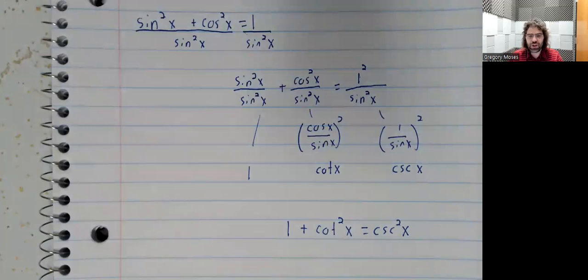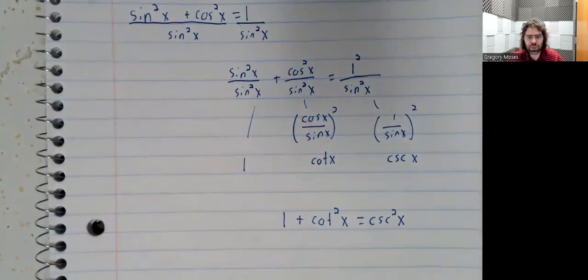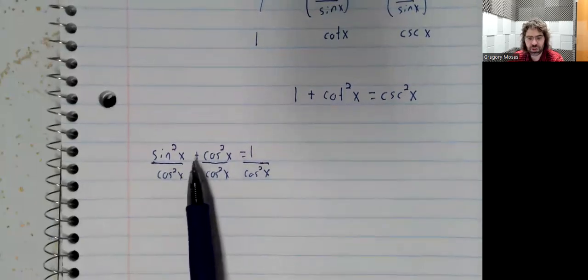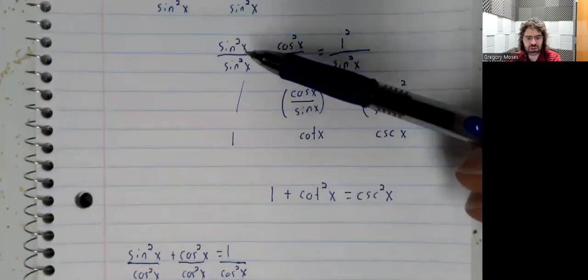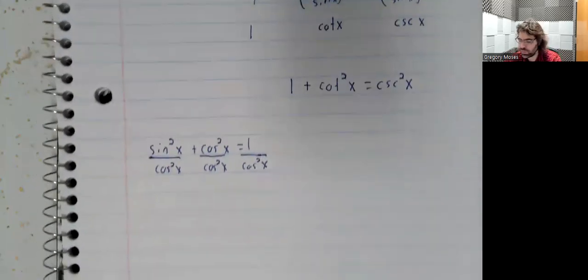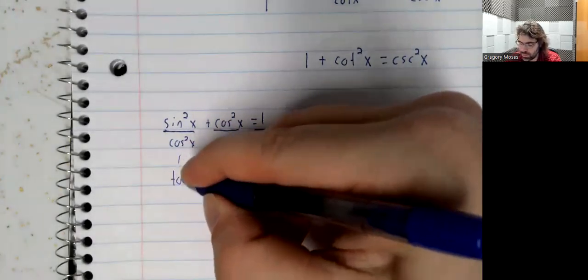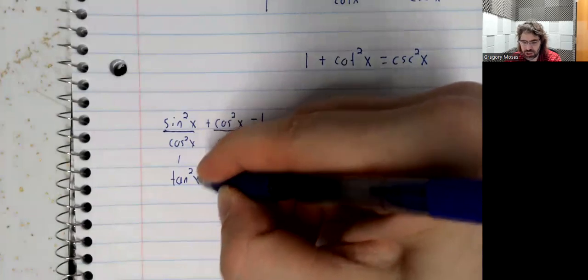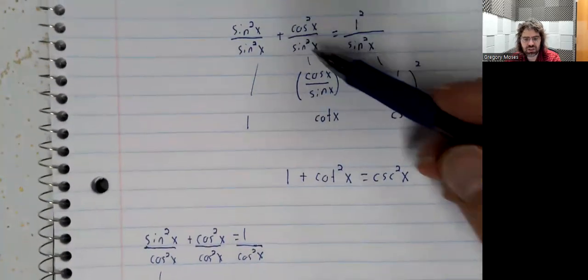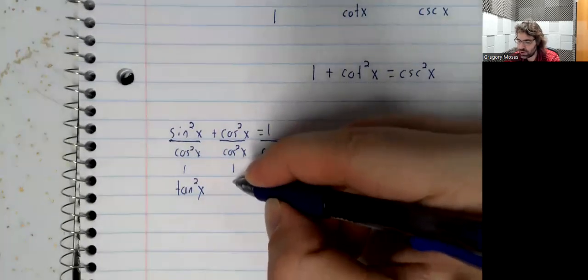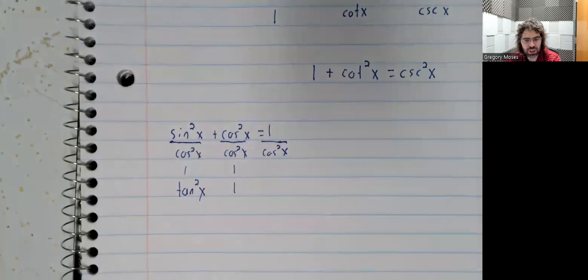If we'd divided by the cosine squared, I won't show all the details. But the fraction breaks apart, just like this fraction did up here. And the sine squared over the cosine squared is the tangent squared, just like this was the cotangent. And the cosine squared over the cosine squared is 1.